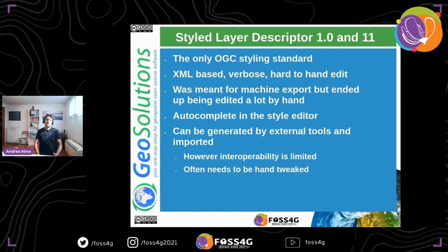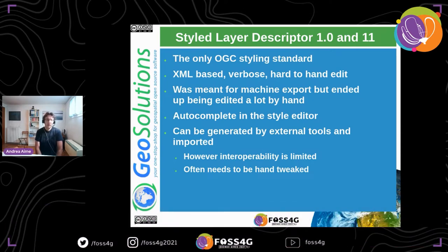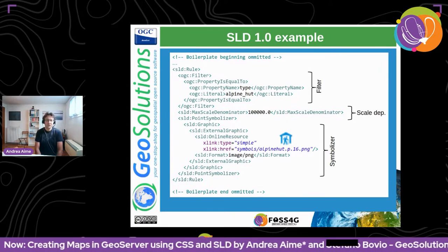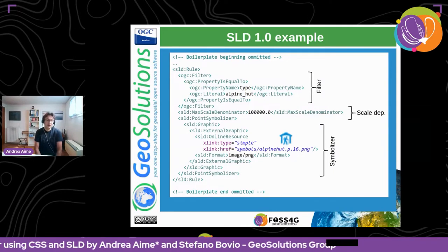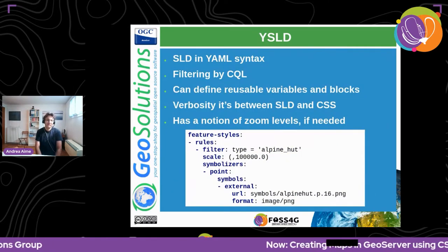SLD 1.0 and 1.1 are the only OGC styling standards. They are XML-based, verbose, and hard to hand-edit — not OGC's fault, as they were designed for machine-to-machine communication. Still, we have an editor for them in GeoServer with some autocomplete, and SLD can be generated by multiple external tools. Here's an example of one style that catches all alpine hats, shows them at scales of at least 1:100,000, and uses a particular PNG icon to display the point.